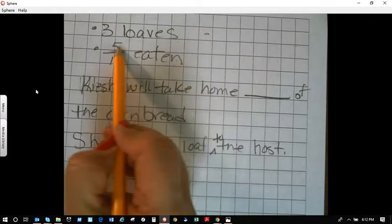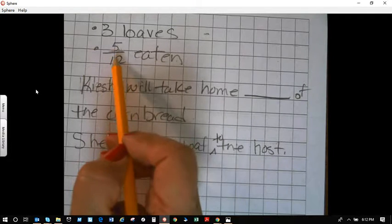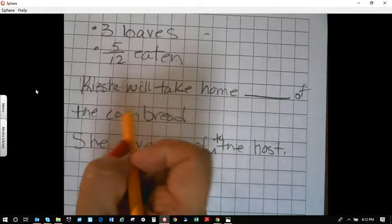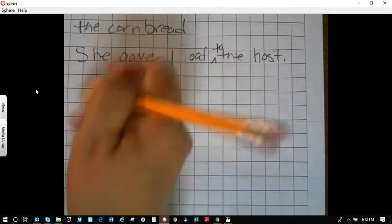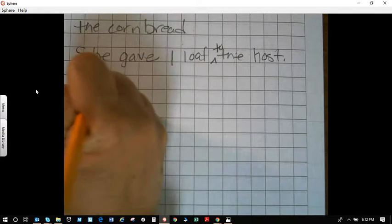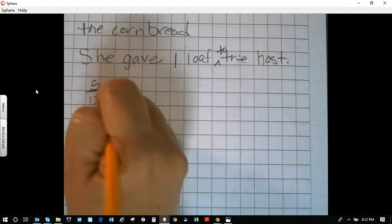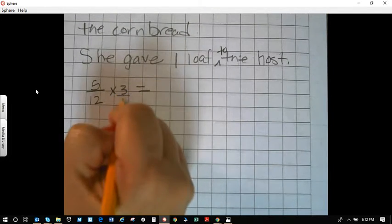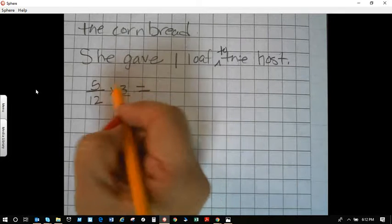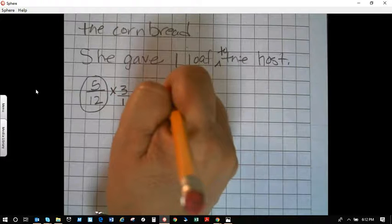Alright, so now, if the party ate five-twelfths of each loaf. So I can draw that into a picture, or I can also do my problem. So, in my multiplication problem, it'll be five-twelfths times the three loaves equals, I'm going to put this over one, but this is the eaten part.